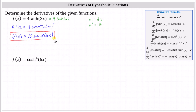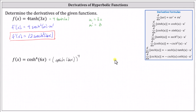The second function: we have f of x equals the fourth power of hyperbolic cosine of six x. It will be helpful to write this as the fourth power of hyperbolic cosine of six x. In this form, we can easily identify the inner function as hyperbolic cosine of six x, which indicates u equals hyperbolic cosine of six x.